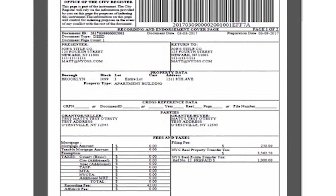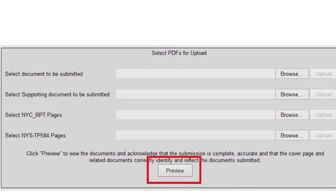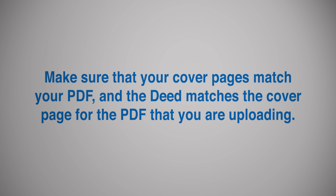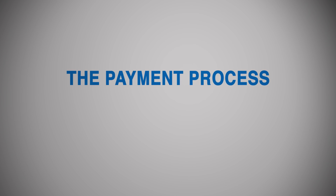The Preview Process. The preview process is very important. Preview all of your submissions carefully to make certain that each PDF has been uploaded correctly, or else the documents will be rejected. For example, make sure the PDFs are not uploaded backwards or sideways, that they're clear and legible, especially the notary stamp and signatures. Scroll down and review the left side of your computer screen. Make sure that your cover pages match your PDF, and the deed matches the cover page for the PDF that you are uploading.